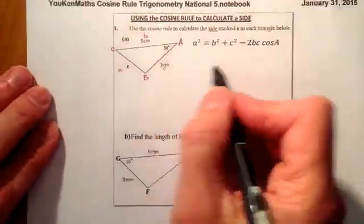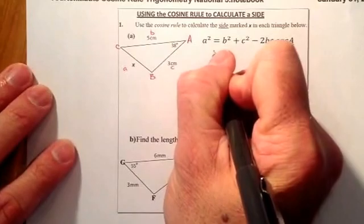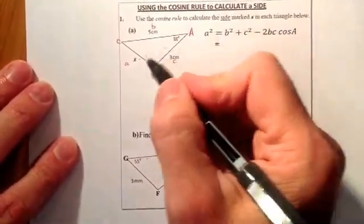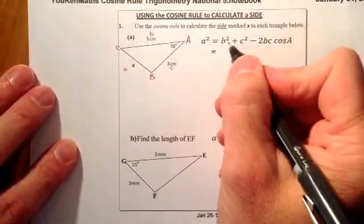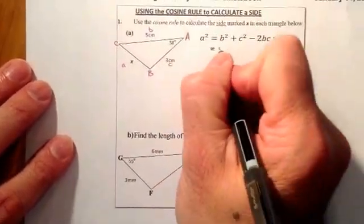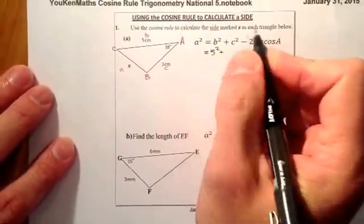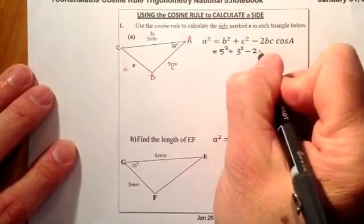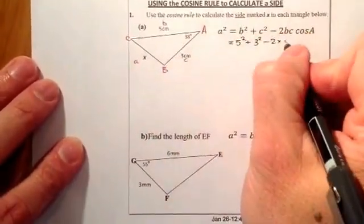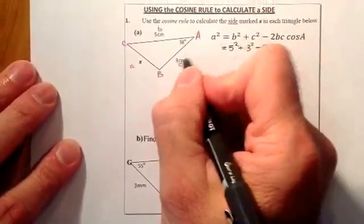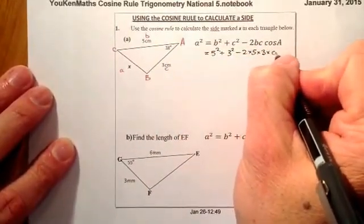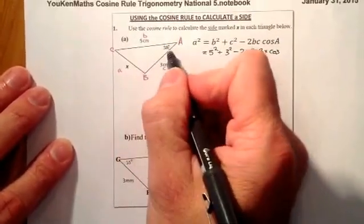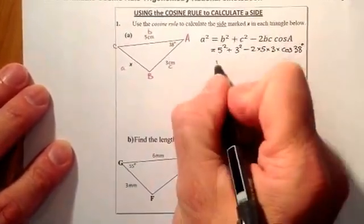So let's populate this formula. First thing I'm going to do is I'm going to be working out what a² is. So I'm going to go for b², so b was 5, so it's going to be 5² plus c², which is 3², minus 2 times b, which is 5, times c, which is 3, times the cosine of a, which is 38 degrees.